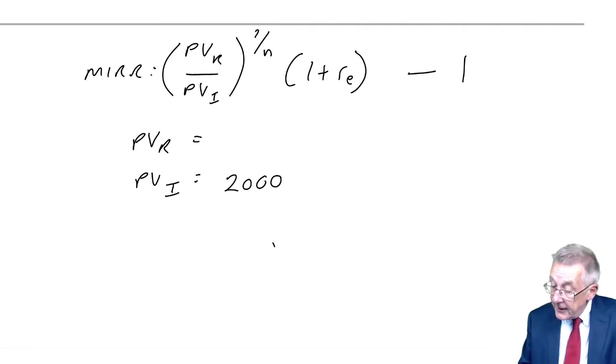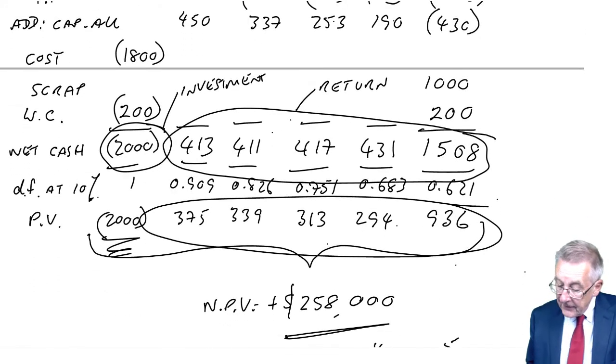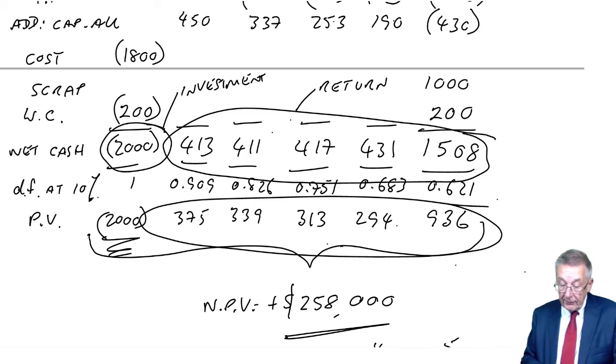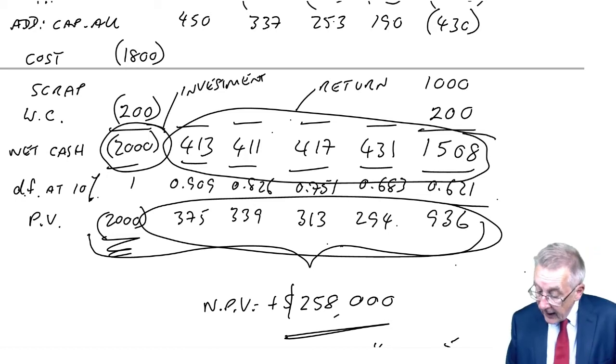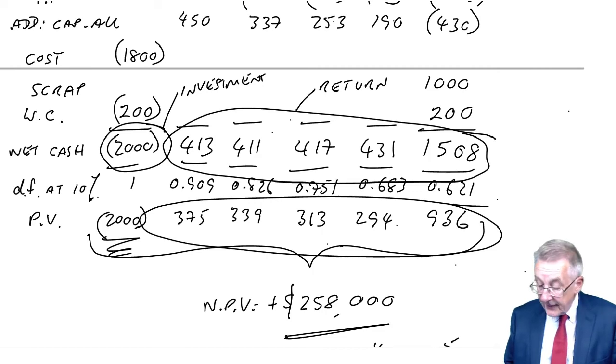As far as the return phase is concerned, that's the present value of all the later inflows. And so the present value of them, 375 plus 339 plus 313 plus 294 plus 936 is 2257. Maybe I was a thousand out before but I'm not worried anyway, it comes to 2257.